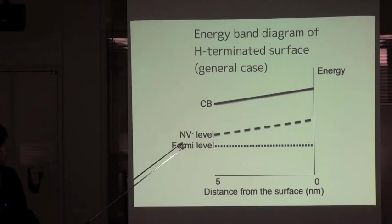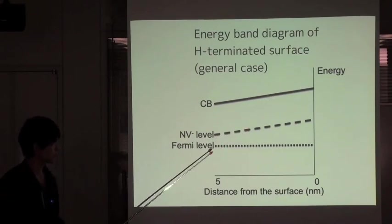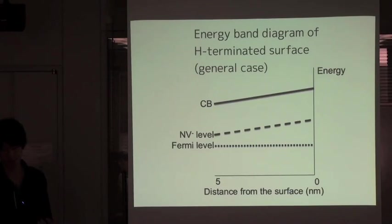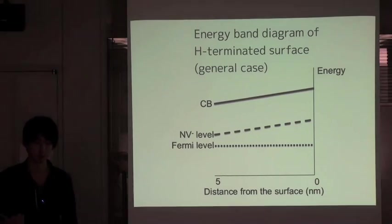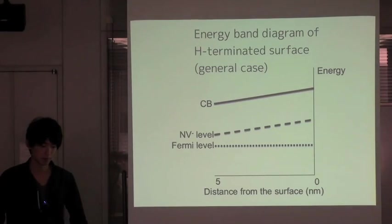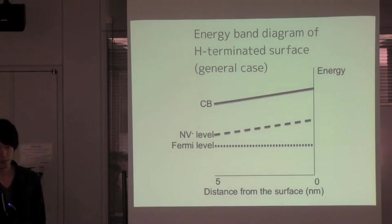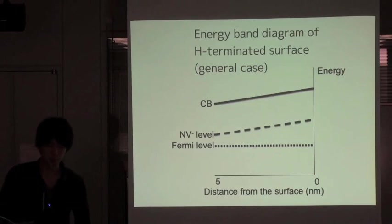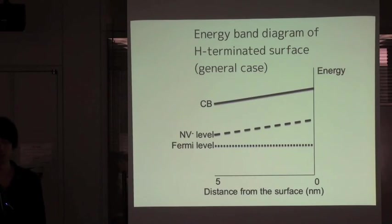As a result, NV minus level goes up other than Fermi level. This means NV center very close to the surface prefer to be NV0, not NV minus. That is a problem because we need NV minus center. NV0 is not useful for magnetometry.